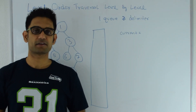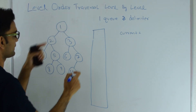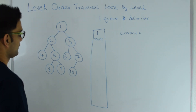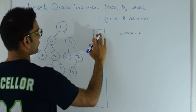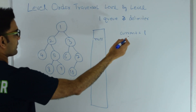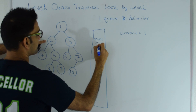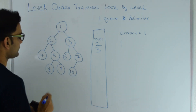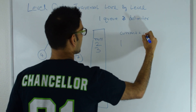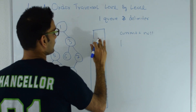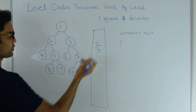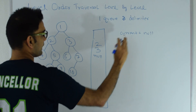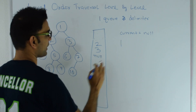My second technique involves using one queue and a delimiter. Let's see how this works. I take the root, put it into the queue, and I also put a null element into the queue. This null element acts as my delimiter. I pop from the top of the queue so current becomes 1. If 1 has a left child I put that at the back of the queue. 1 has a right child so I put that at the back of the queue and then I print 1. Now I pop again and current becomes null. As soon as I see a null, I push a null at the bottom of the queue and also print a new line, so we start printing from the next line.